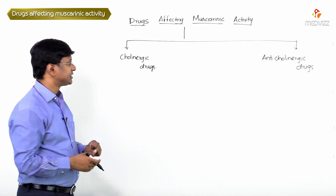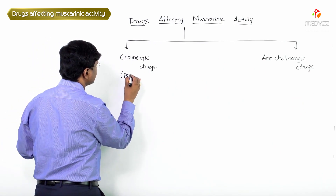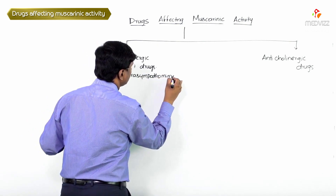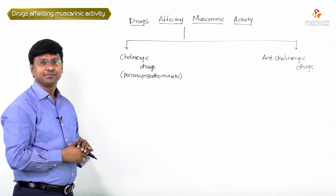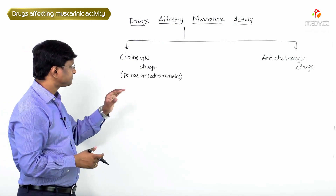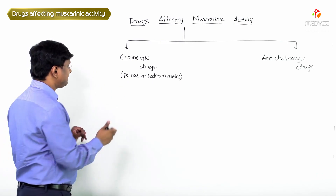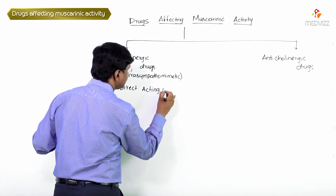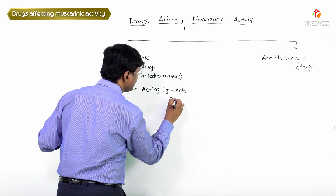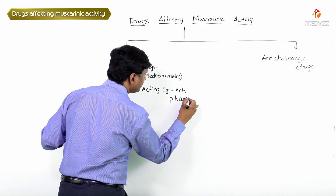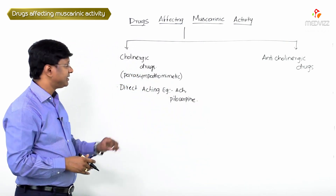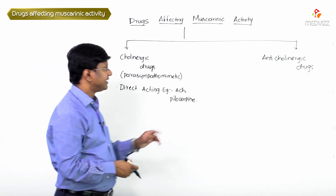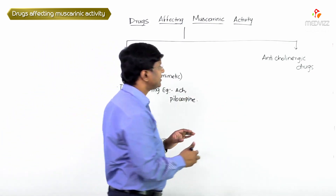Cholinergic drugs are also called parasympathomimetic drugs. Examples of parasympathomimetic drugs include directly acting drugs such as acetylcholine and pilocarpine. These are the directly acting parasympathomimetic drugs.